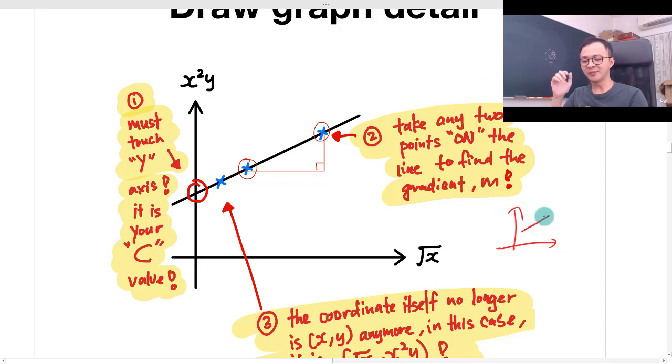maybe the line looks like this. And then when you want to get a C value, you realize you can hardly get a C value on your vertical axis. So then only you connect. So normally I'll ask my students, whenever you draw the line, make sure you touch the vertical axis.